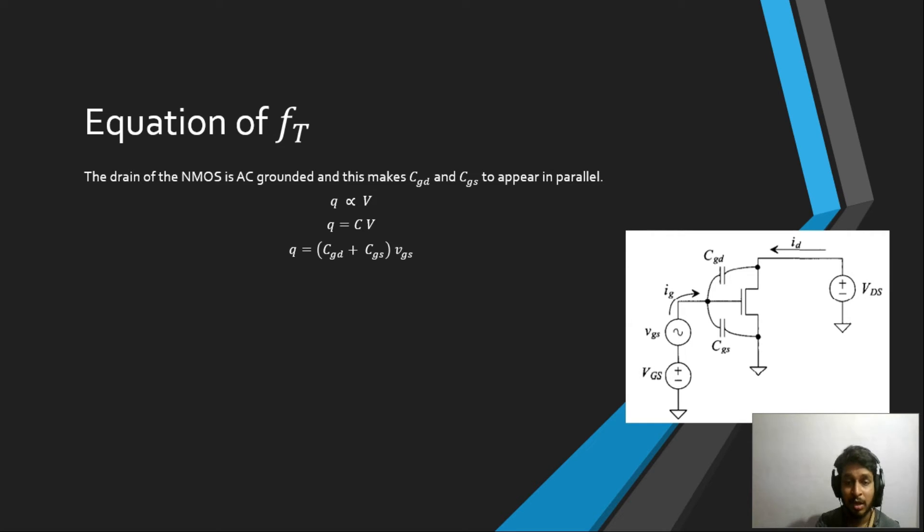Now what we try to do is we will differentiate the equation on both sides. We will get dQ by dT, and CGD plus CGS is a constant, and dV by dT.